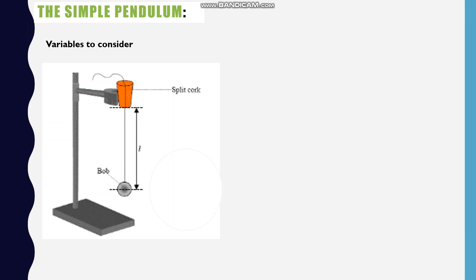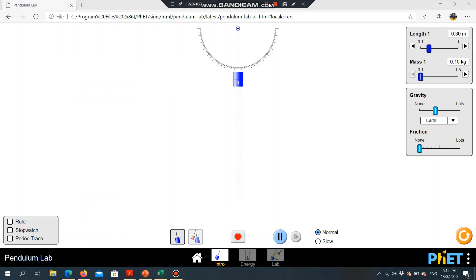Now, what are some of the variables that you may consider when looking at the simple pendulum? Some variables are the length, mass of the bob, and the amplitude. And we would like to find out how these factors may affect the period of the pendulum. To do that, we are going to use a simulation of a simple pendulum. This simulation is from the University of Colorado, the PhET simulation, and this is the pendulum lab.